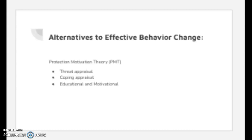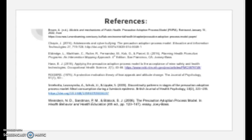An alternative to the Precaution Adoption Process Model is Protective Motivation Theory, which explains that people protect themselves based on two factors: threat appraisal, which explains the severity of a problem, and coping appraisal, which explains how people respond to a situation. Protective Motivation Theory represents a social cognitive model of an individual's motivation to engage in protective behavior and could be applied to studies such as the miner study to provide education to individual workers about new mine safety and health technology. This ends our presentation. Thank you.